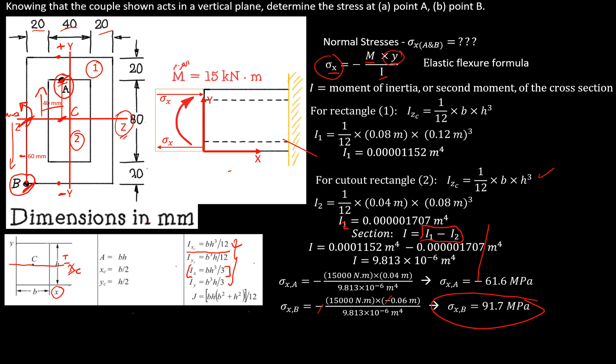This confirms our earlier statement: the further from the neutral axis, the higher the normal stress. As expected, the stress at point B is higher than the stress at point A.